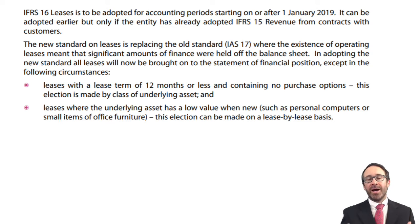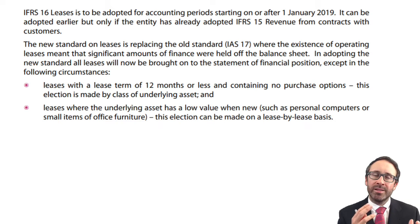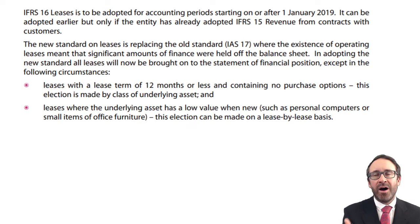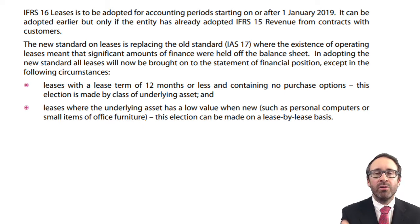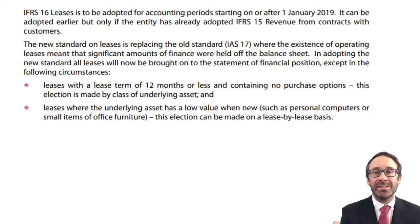The big issue we had when looking at IAS 17 under the old accounting standard is that we had two different types of leases for lessee accounting. The problem with that meant there was a lot of finance held off the balance sheet — no lease liability was recognised in a large proportion of leases, and this didn't give a fair reflection of how the financial statements were representing leases.